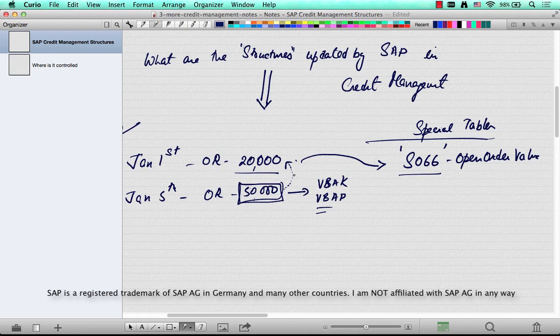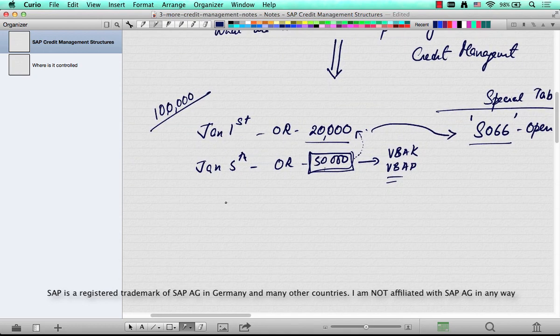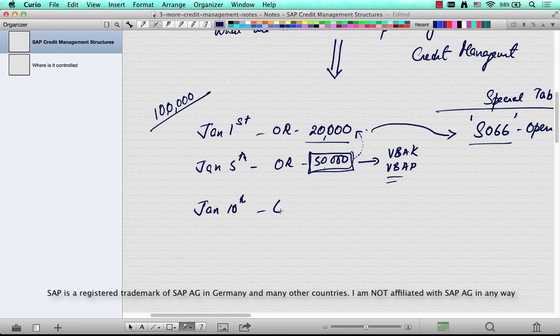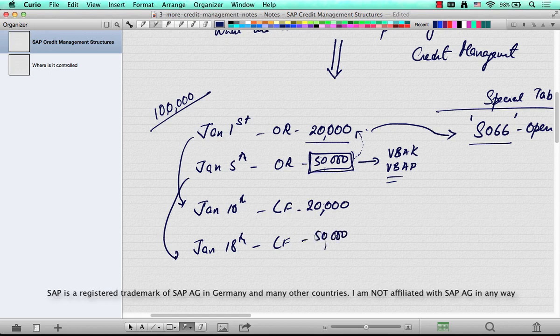So similarly, if on Jan 10th a delivery is created again for a value of 20k, and on Jan 18th another delivery for this order is created which is for a value of 50k.